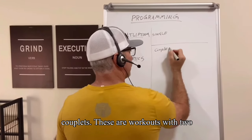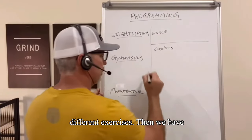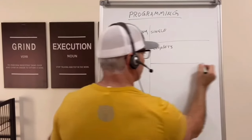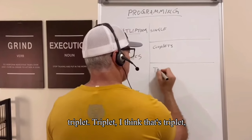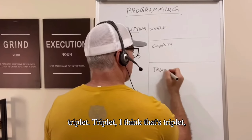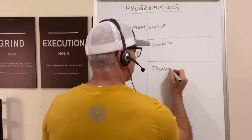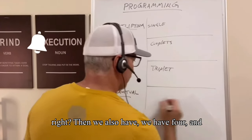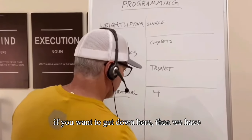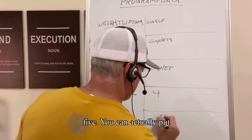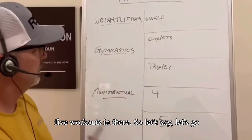Then we have couplets — these are workouts with two different exercises. Then we have triplets. Then we also have four. And if you want to get down here, we have five — you can actually put five movements in there.